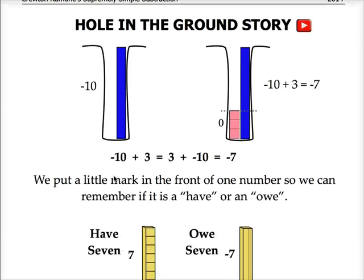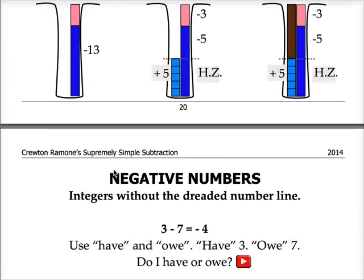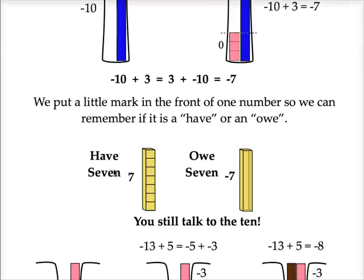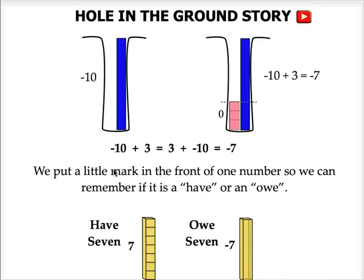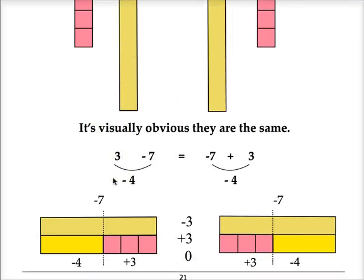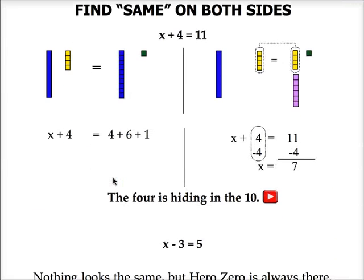And then we have integers. Integers, again, no number lines. Kids hate the number line. I hate to break it to you, but they hate the number line. So rather than using a number line, it's going to use blocks, and we're going to show them how easy it is. Little kids, little first and second graders, playing around with integers, no problem.